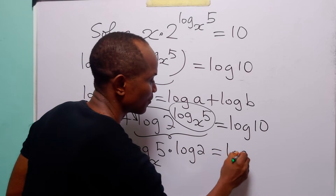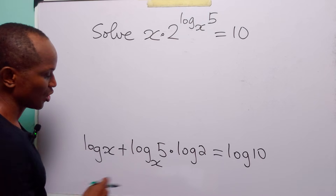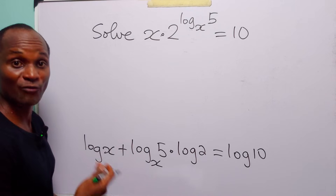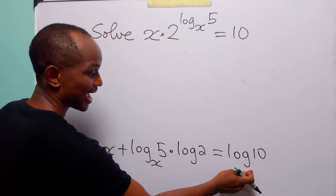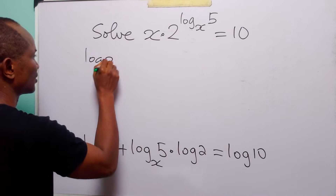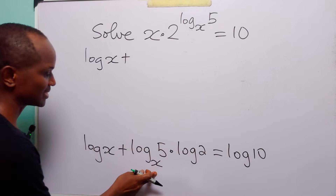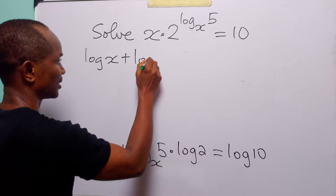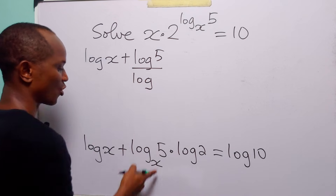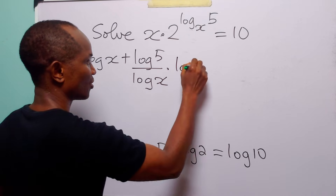And this is equal to log 10. Now we are going to change the base of this logarithm from base x to base 10 for uniformity, since these other logarithms are all in base 10. So we have log x plus, applying the change of base formula, log 5 divided by log x, and we still have times log 2.